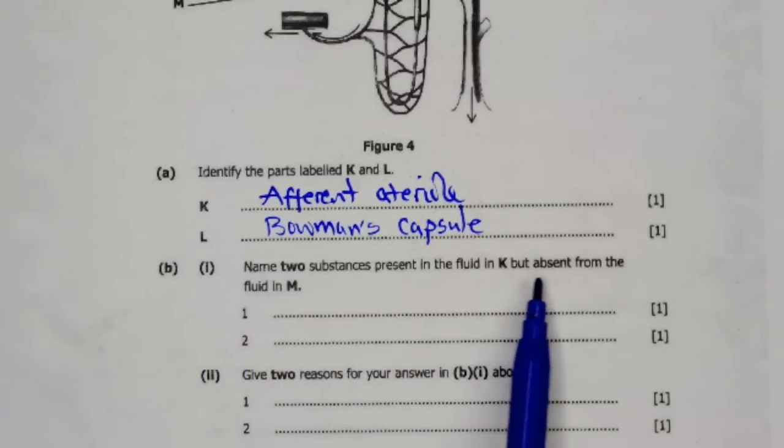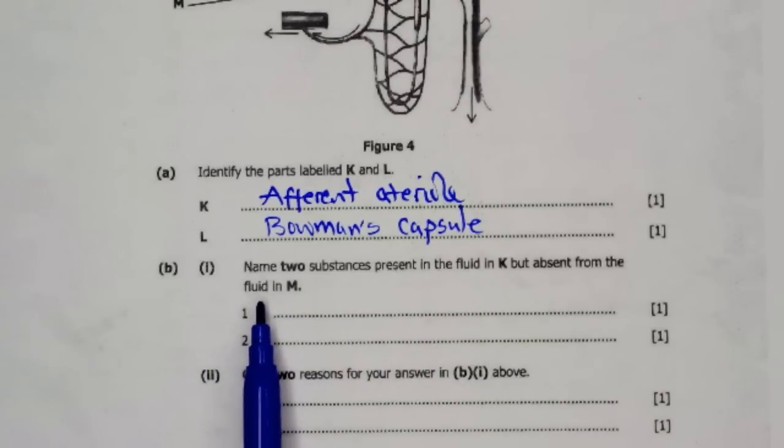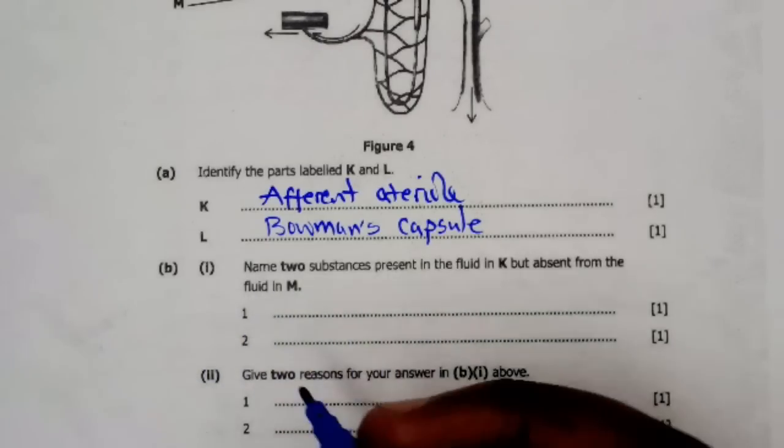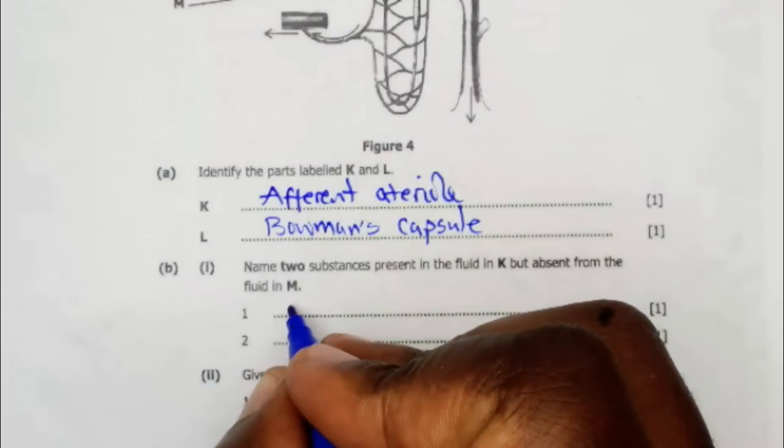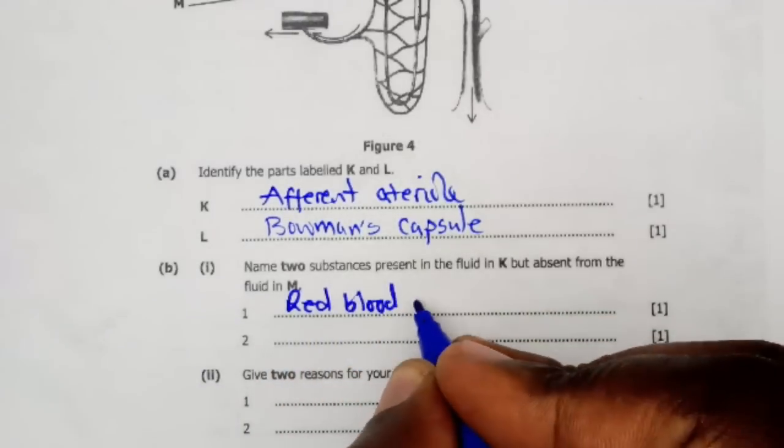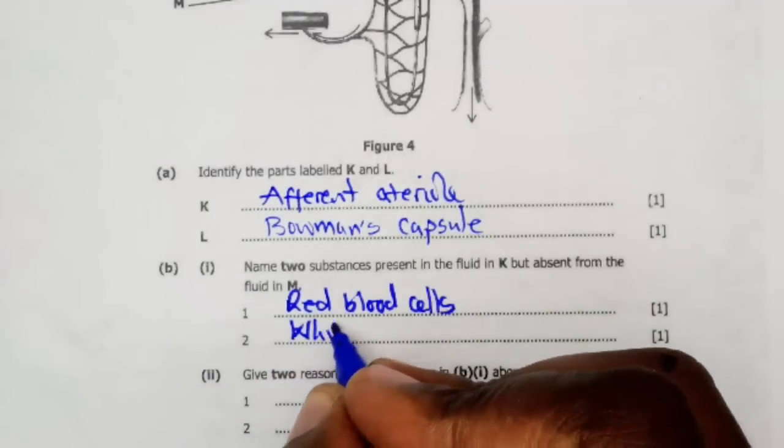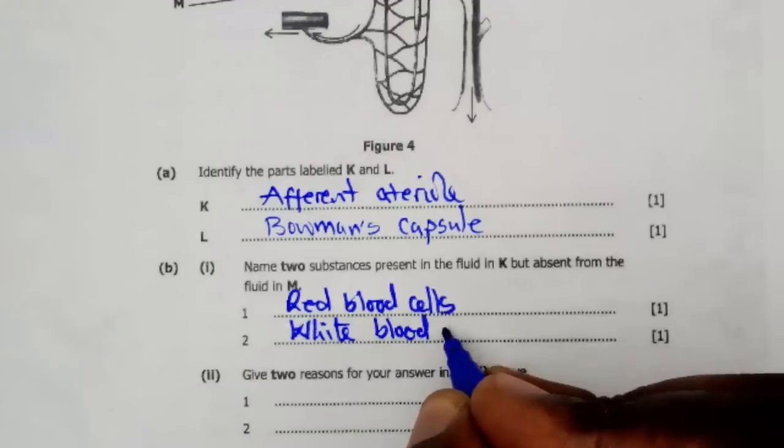B1: Name two substances present in fluid K but absent from fluid in M. The parts which are absent in the glomerular filtrate can be red blood cells, white blood cells, blood platelets, as well as the proteins.